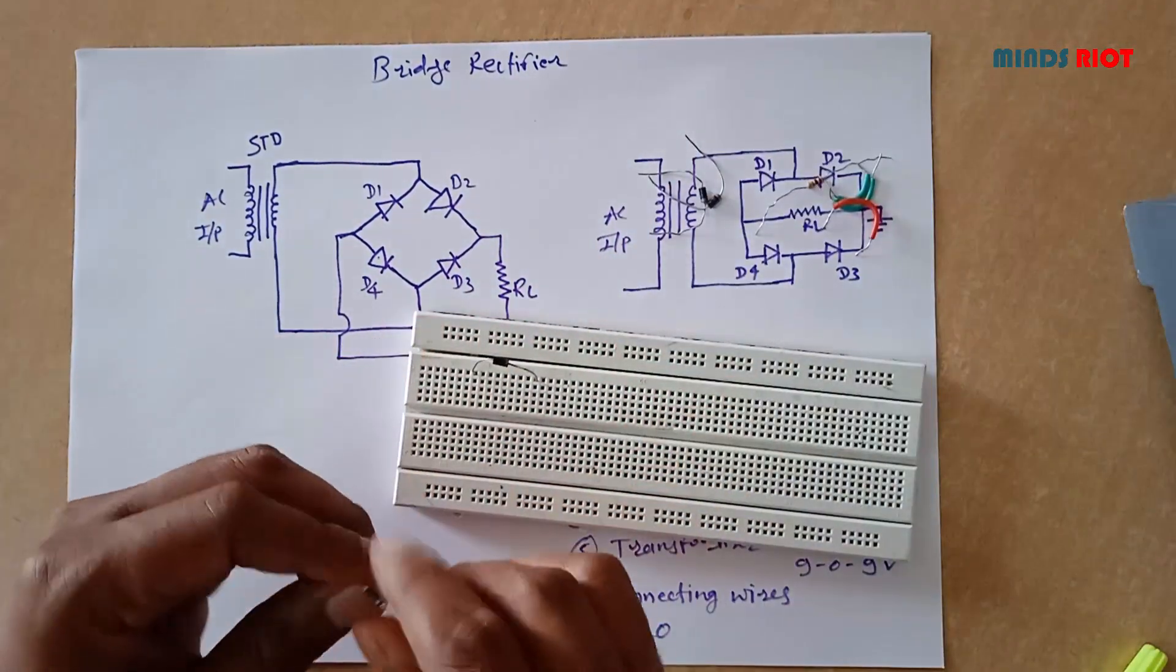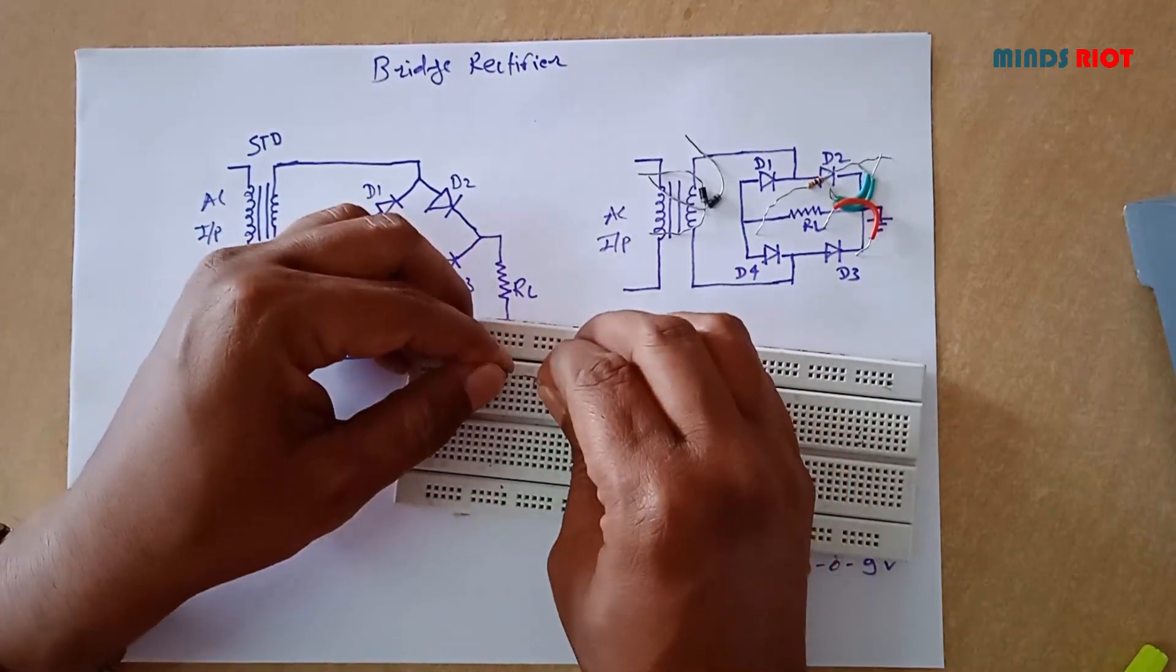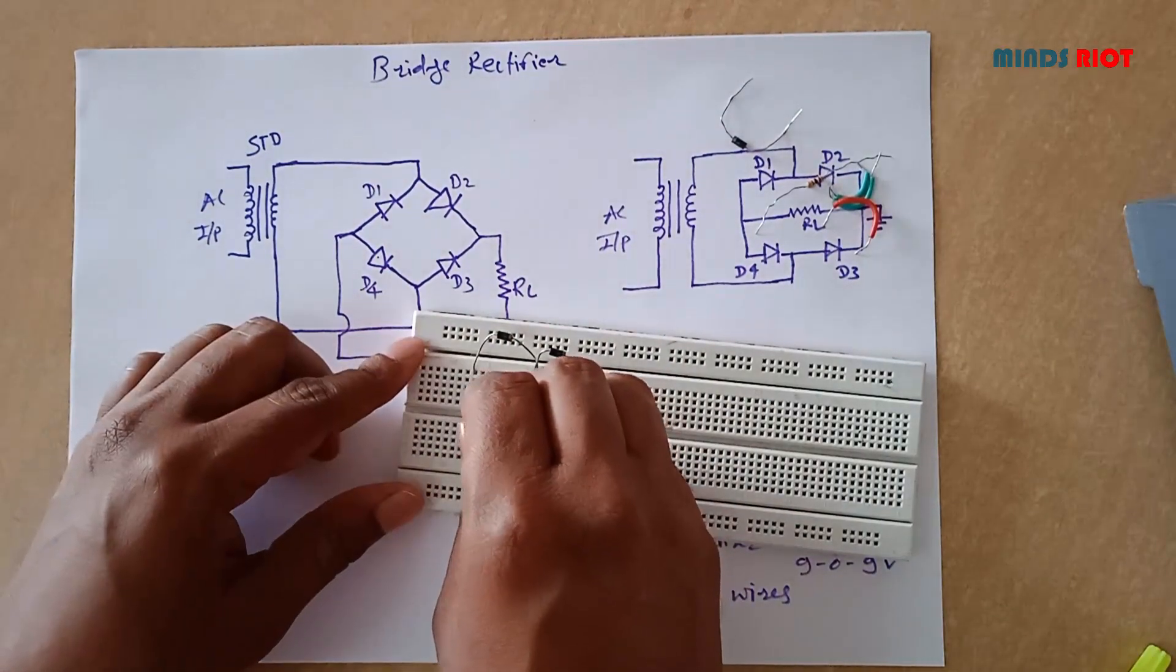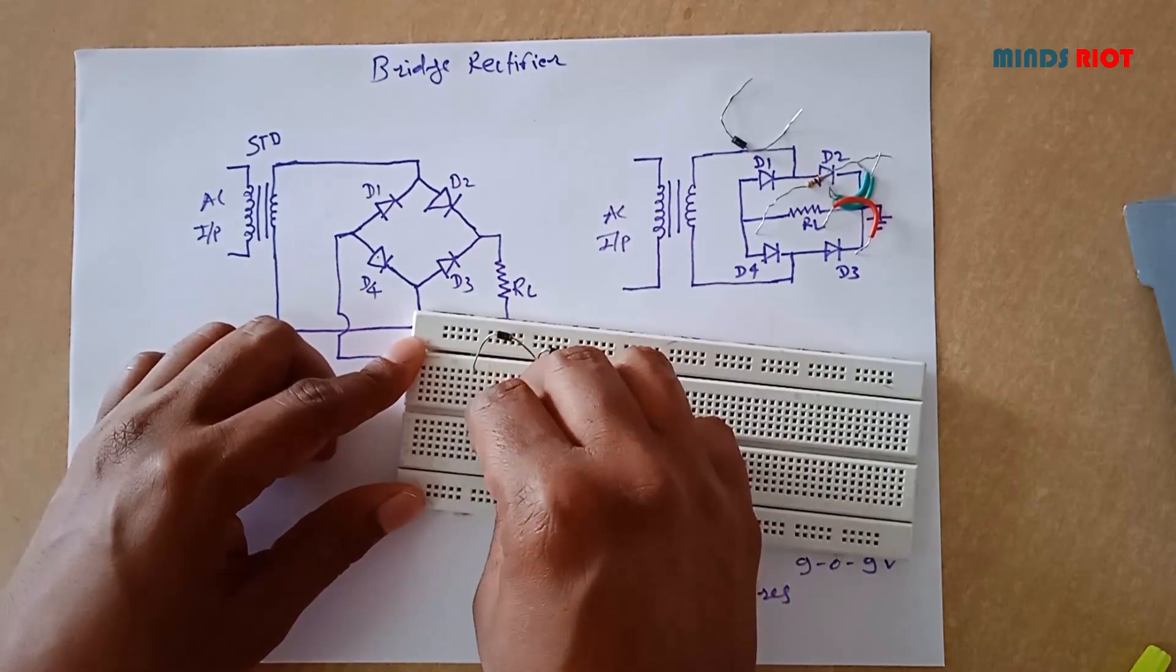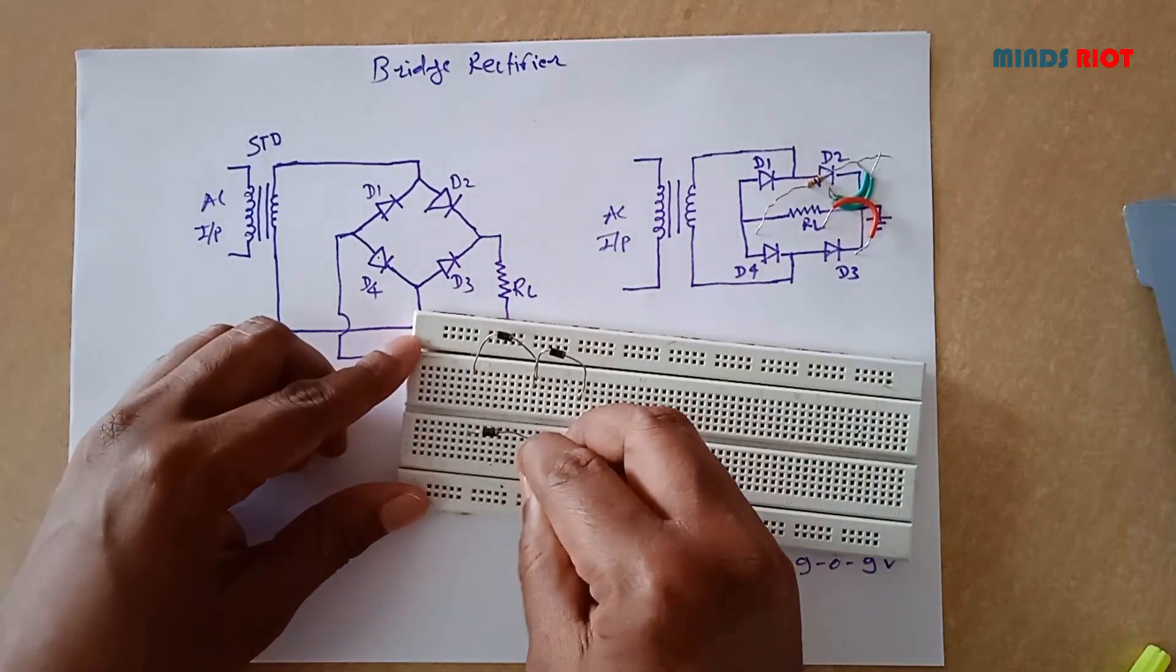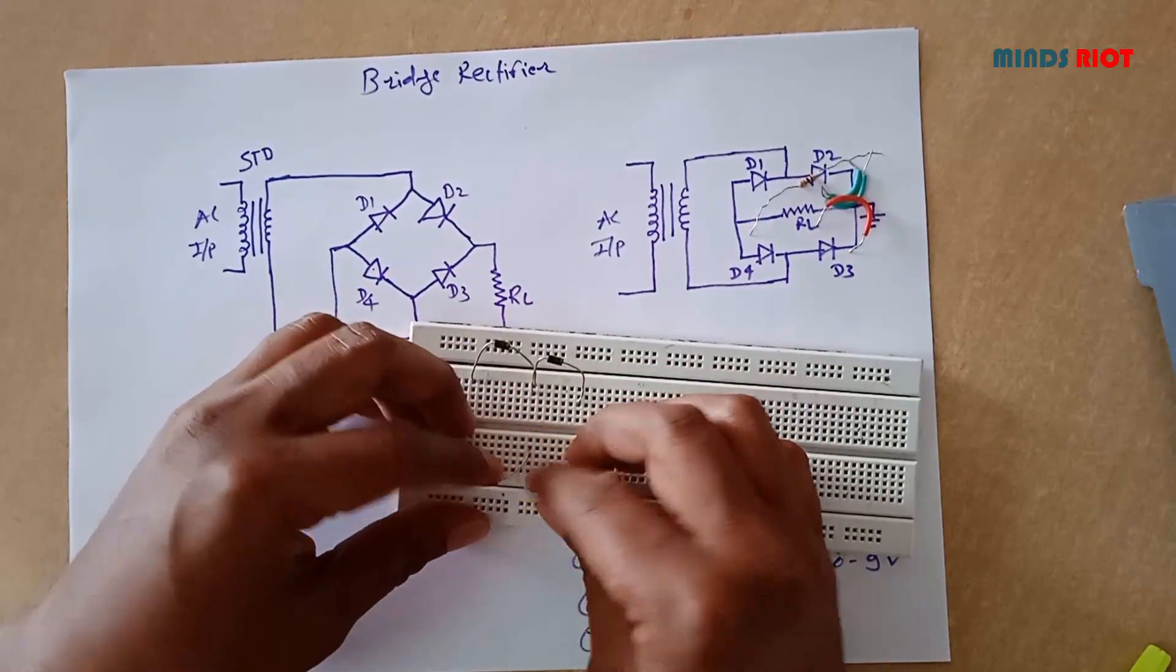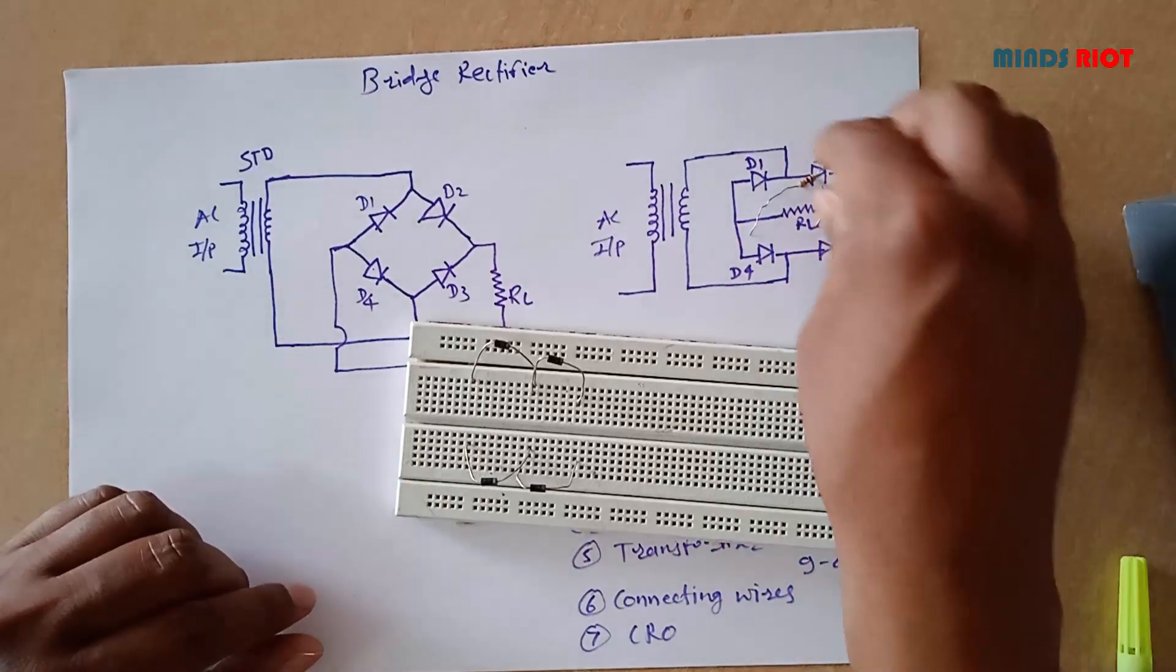This is the first diode. Cathode of first diode goes to anode of second diode, and third diode, and fourth diode. Cathode to anode.